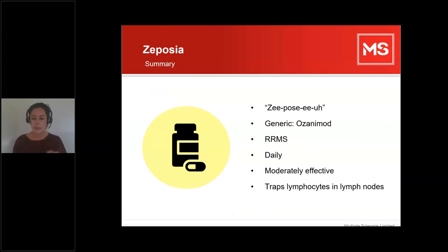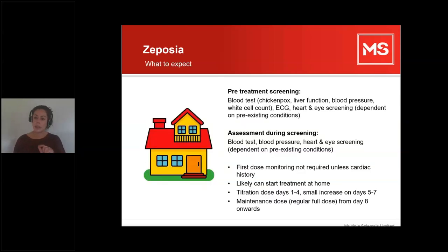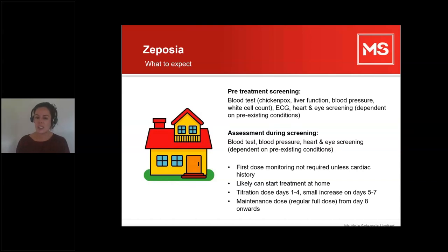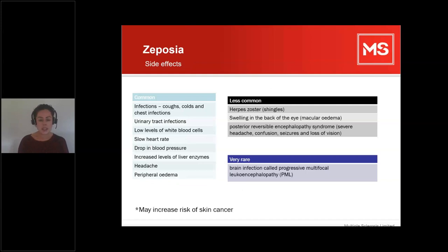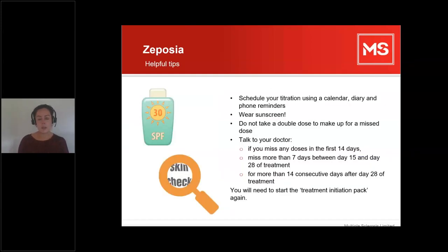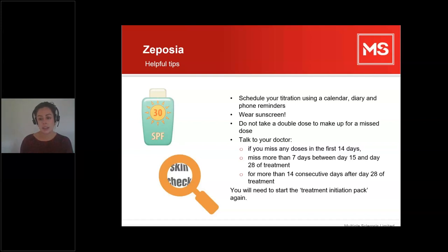Zeposia works in the same way as Gilenya but because it doesn't bind to S1P receptor 3, you may be able to start it at home unless you have a cardiac history requiring monitoring. There is a titration — starting on a lower dose and increasing to a maintenance dose. The side effect profile is similar to Gilenya. Helpful tip: build this into your daily routine with alerts or reminders, and be especially careful not to miss any doses during the titration period — if you do, you may need to start from scratch.